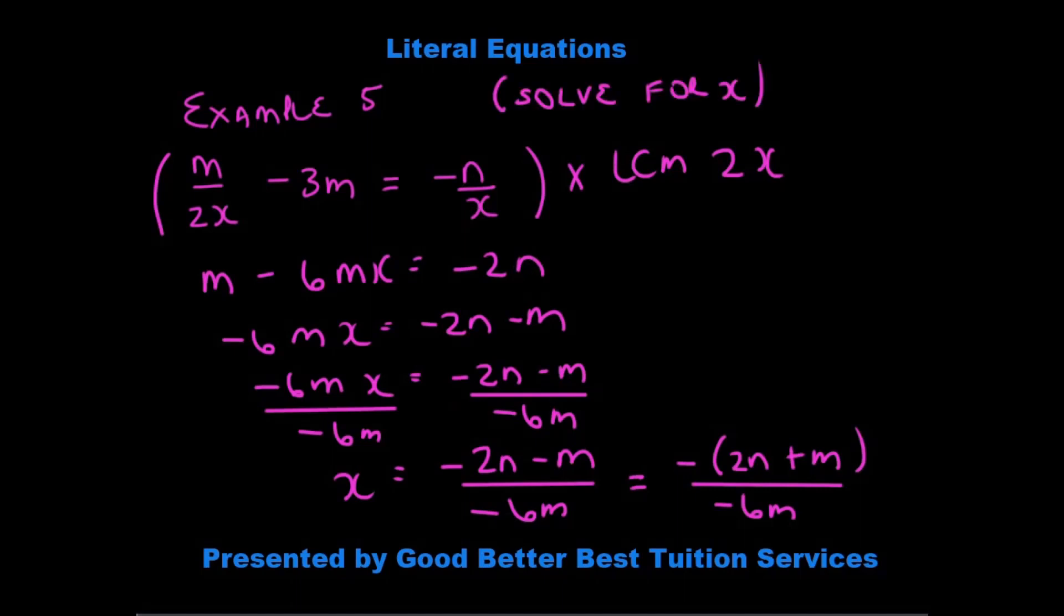Okay. Apologies, I forgot to mention that in this case we are solving for x. That leaves us with m minus 6mx is equal to minus 2n.